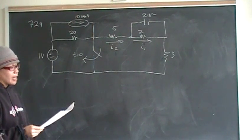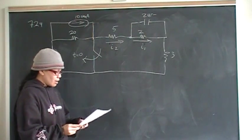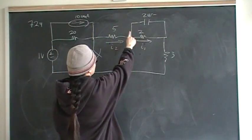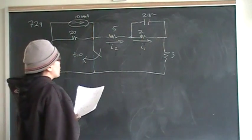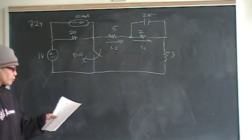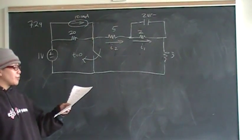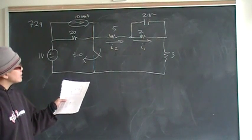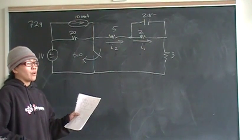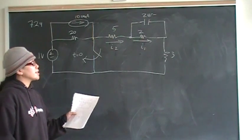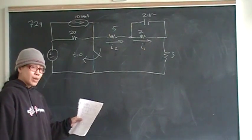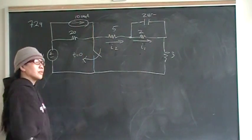We're looking for the current going into the node that connects the 2-ohm resistor and the 2-microfarad capacitor. First, I drew the circuit before time zero. When you do that, things simplify. Look at the property of the capacitor in the steady state — once you know that property, this becomes a circuit you can solve using KCL. My KCL node was right there.